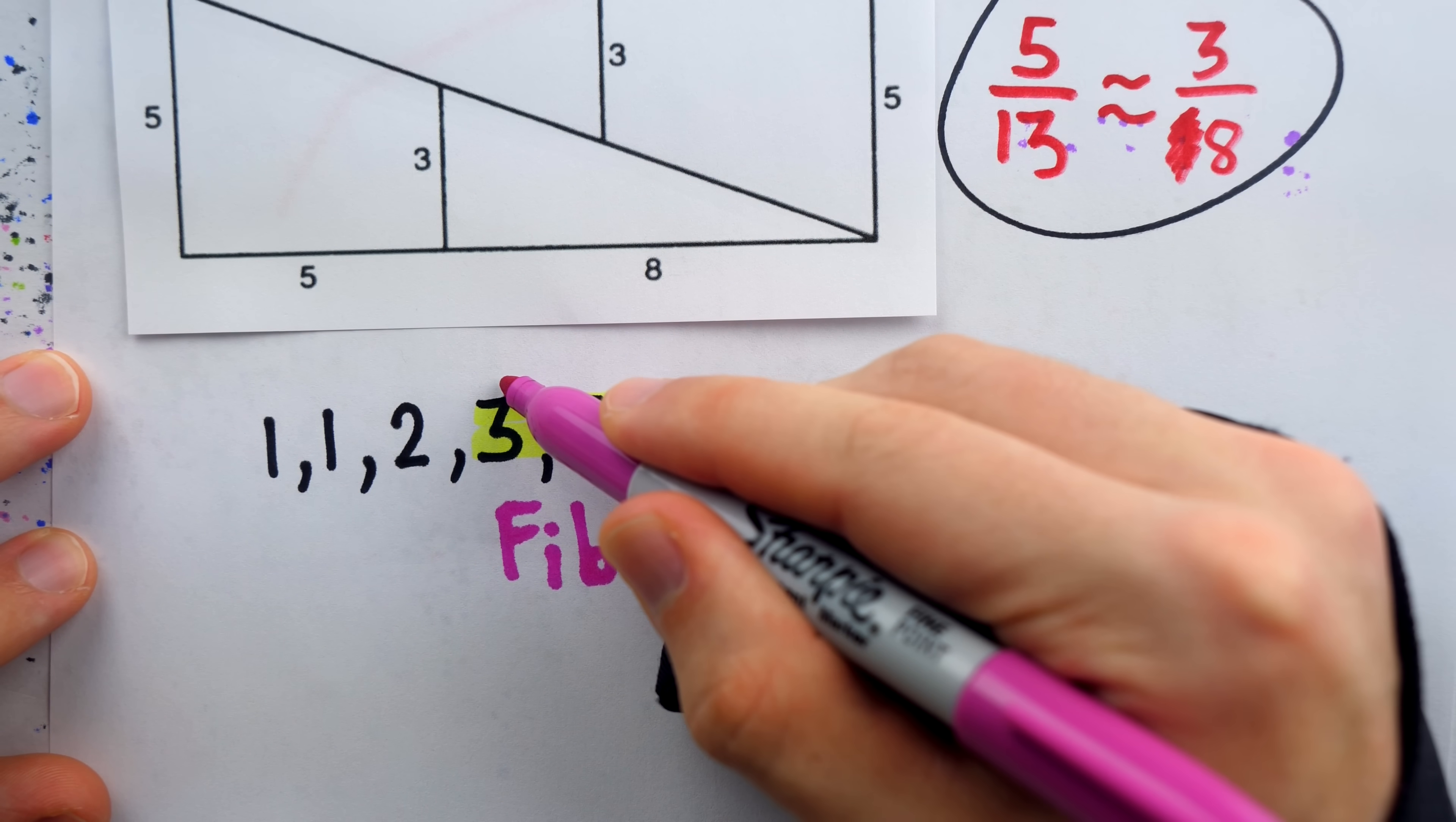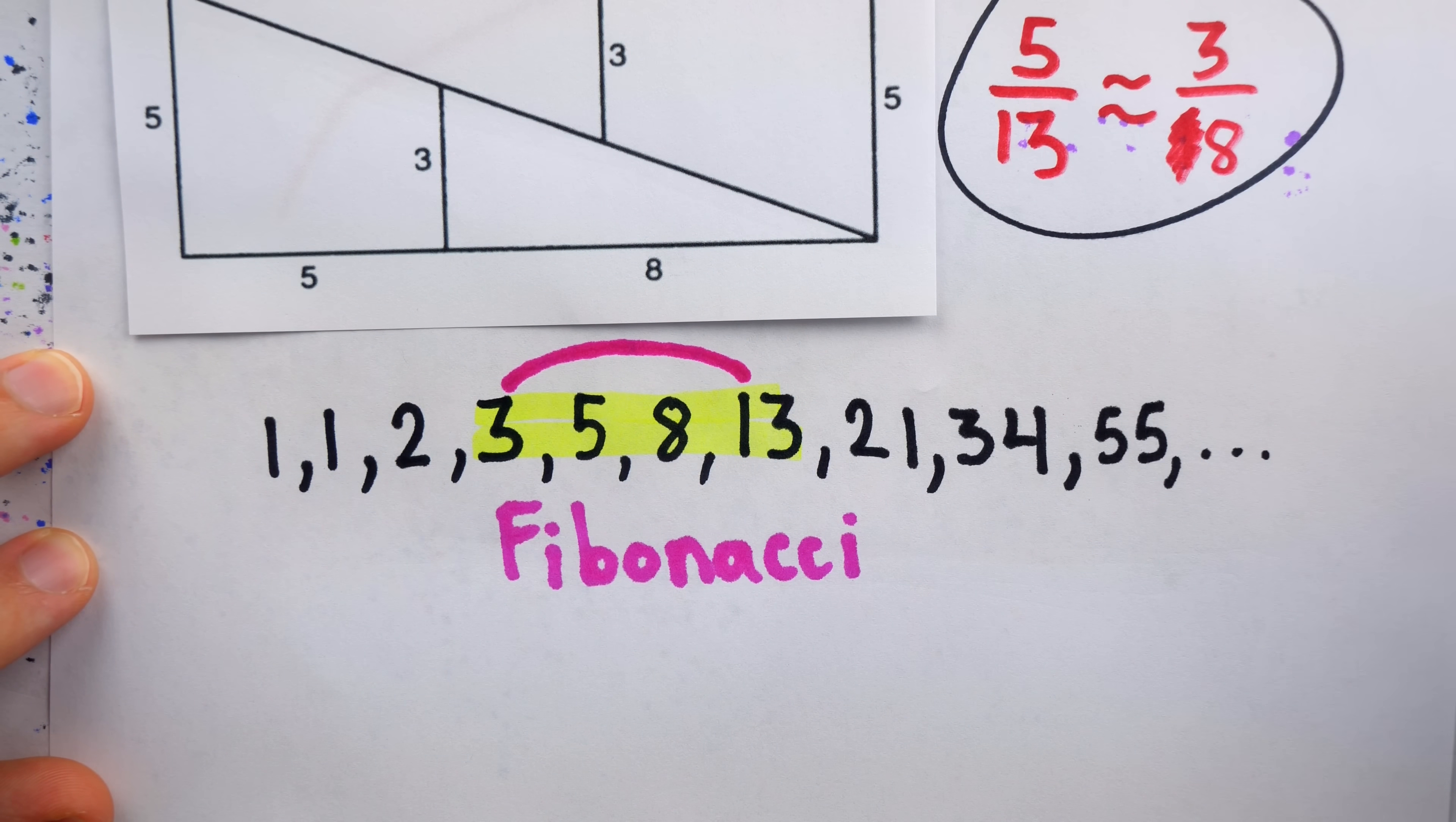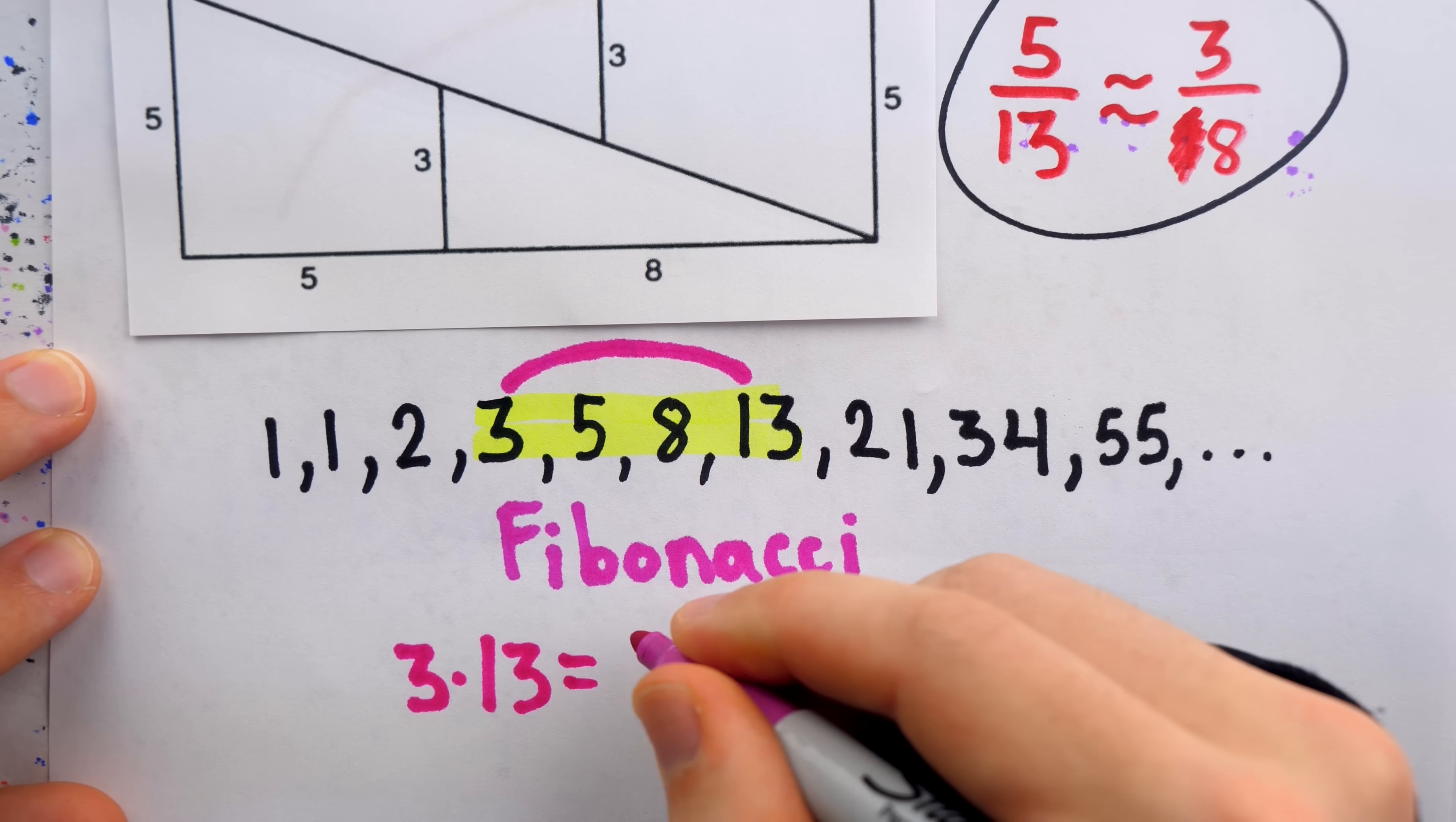Look what happens when we take the outer two numbers from these four in a row, so 3 and 13, and multiply them. 3 times 13, of course, is 39.